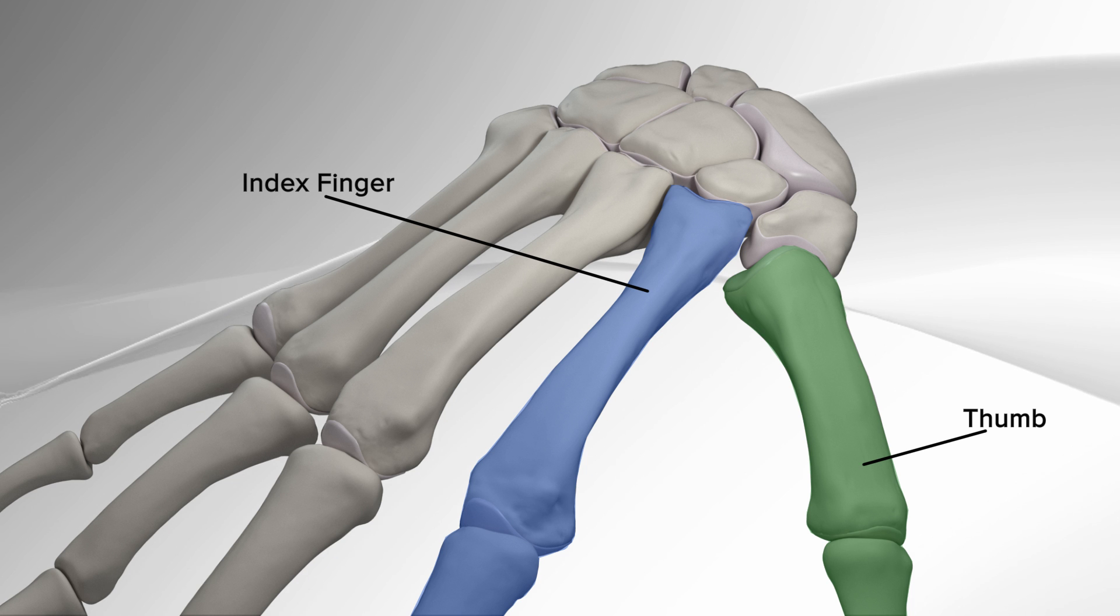Two bones at the base of the thumb lose their cartilaginous envelope throughout time, ending in bone-on-bone contact, which causes significant pain and functional limitation.